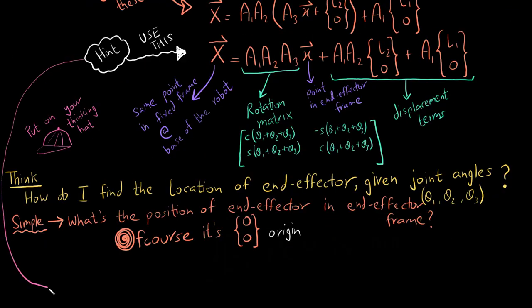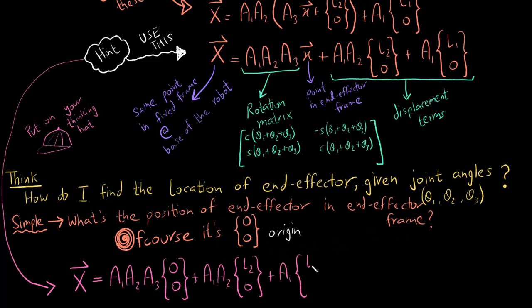So I use this equation here, the big X equation, and in this equation I simply substitute the small x as 0 and 0. And then I just solve this equation.